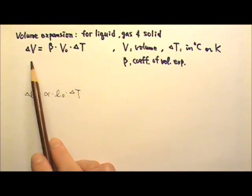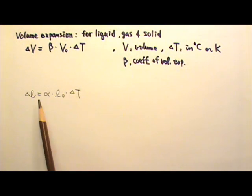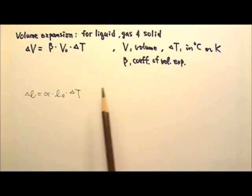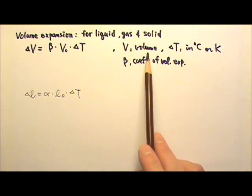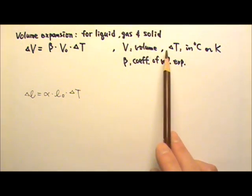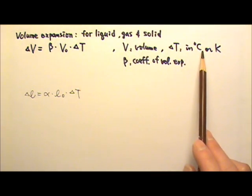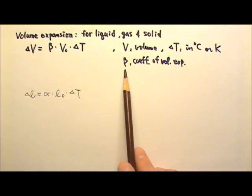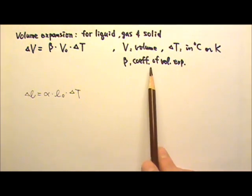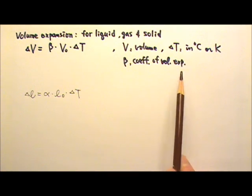The equation for volume expansion is very similar to that of linear expansion. The capital V is for volume, delta T is in degrees Celsius or Kelvin, and beta is the coefficient of volume expansion.